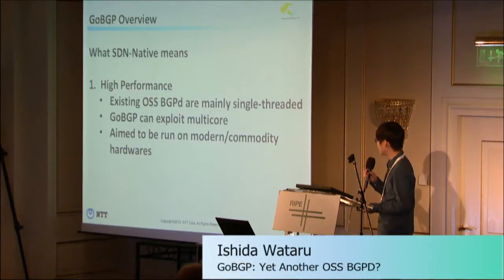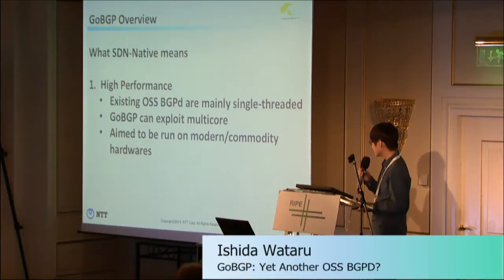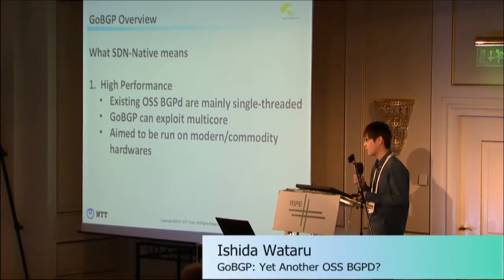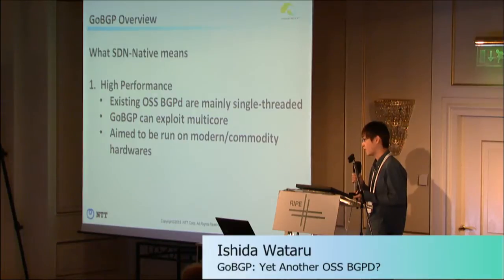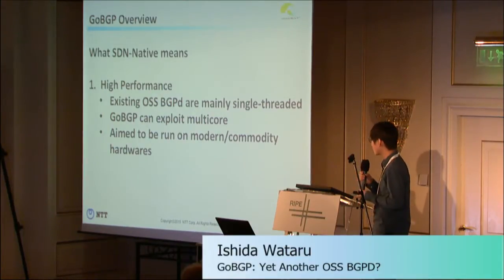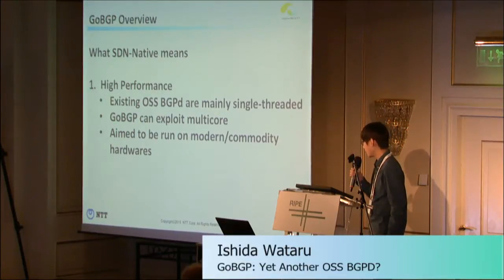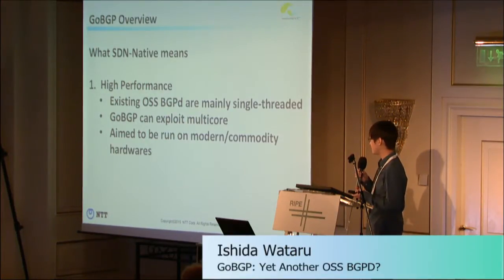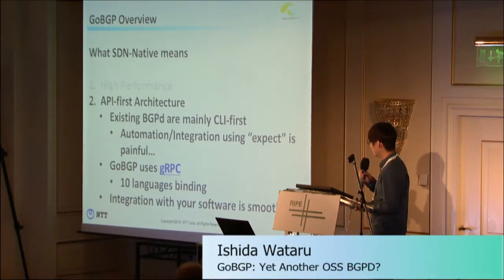What SDN-native means for us: the first is high performance. Existing open-source BGP daemons are mainly single-threaded, so they can only exploit one CPU core. GoBGP can exploit multiple cores thanks to the Go language, and it aims to run on modern commodity hardware which has many CPU cores and tons of memory.